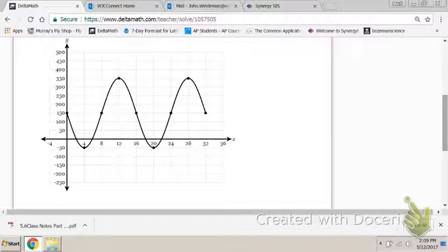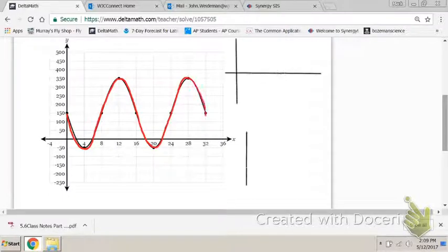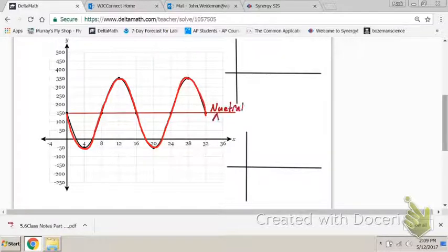So the first thing that we do, similar to what we did before when we got this graph, let's look for a vertical shift. Let's find the neutral axis of this graph. If it's above or below the x-axis, then we know we have a vertical shift. So how do we find that neutral axis for this graph?